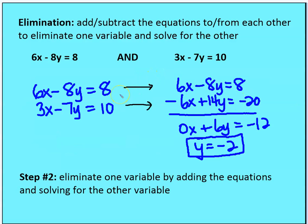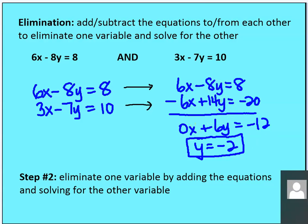Now I line up the two equations: the first one as-is and the second multiplied by negative 2, then I add them together. Adding vertically, the x terms cancel — I've eliminated x. I end up with 6y equals negative 12. Solving for y, I get y equals negative 2.